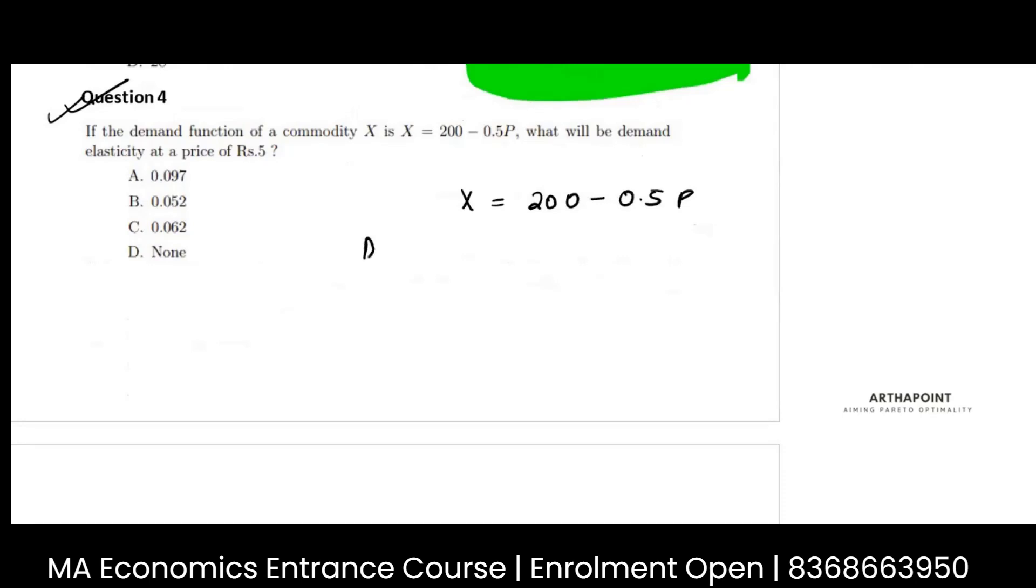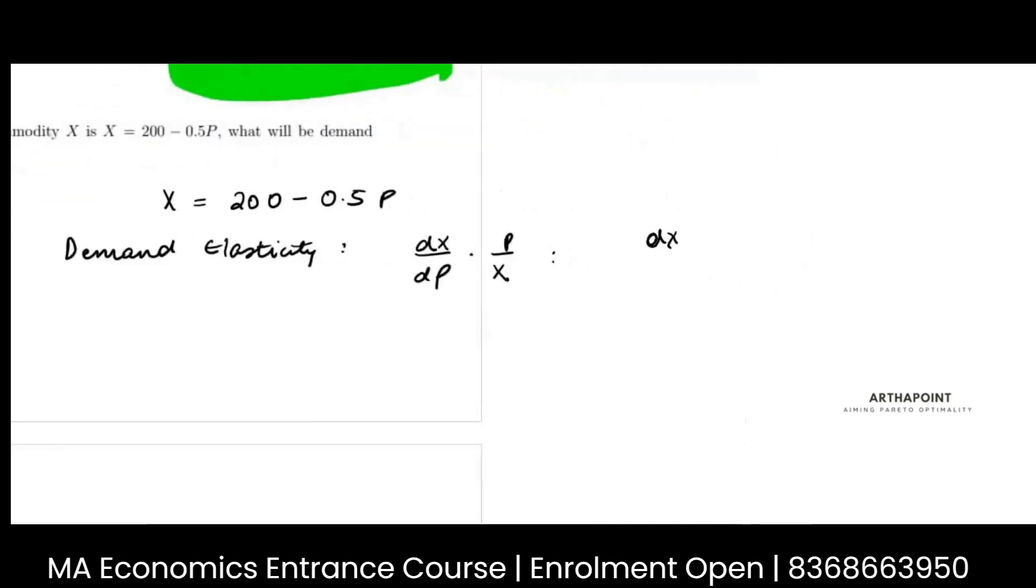The demand elasticity is given by dX/dP times P/X. This is nothing but dX/X upon dP/P. This is the percentage change in X due to the percentage change in price. This is exactly what demand elasticity is - how quantity changes when price changes.